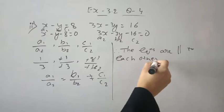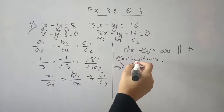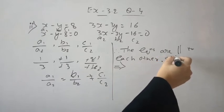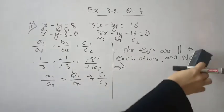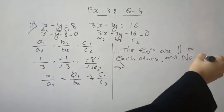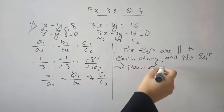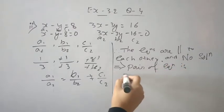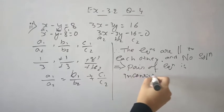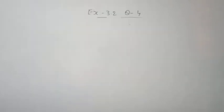Therefore the given linear equations are parallel to each other, so there is no solution. If a1/a2 equals b1/b2 but not c1/c2, the lines are parallel. Therefore it has no solution, and is inconsistent. If all three ratios are equal, there would be infinite solutions.